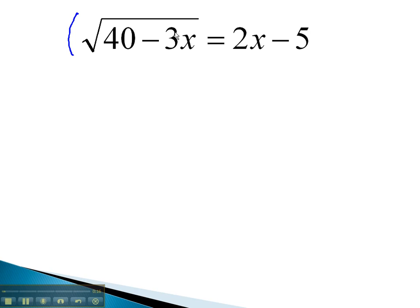Again here, we have a square root. To get rid of a square root, we must square both sides of the equation. On the left, square and square root are inverses, and we're left with 40 minus 3x.